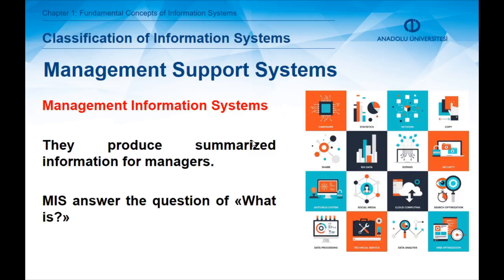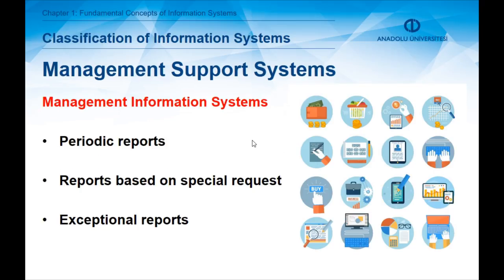Management support systems is the second class of information system. They generally provide support to the managerial decisions of managers. The first type — and perhaps the most famous — is management information systems. Management information systems produce summarized information for managers, provide answers to inquiries, and determine specific situations asked by managers. They answer the question of 'what is.' Management information systems produce three types of reports: periodic reports are produced in specific time periods without being requested.